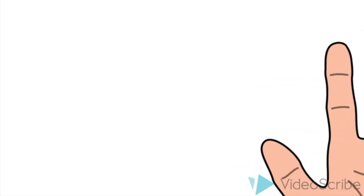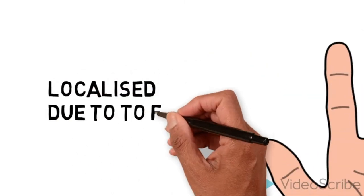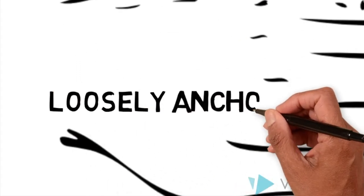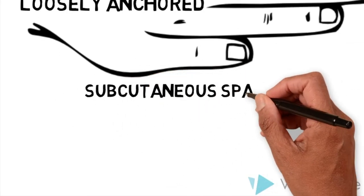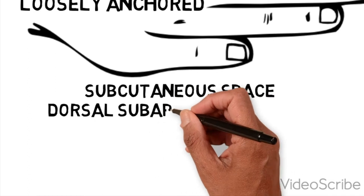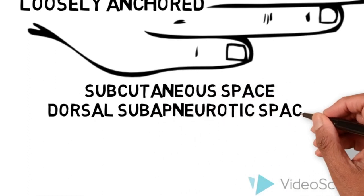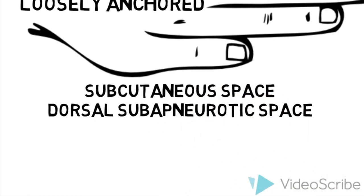In the palm, the infection is usually localized, as fibrous septae limit spread. In the dorsum, the tissue is loosely anchored, allowing spread of the infection into two potential spaces: either the dorsal subcutaneous space, which is superficial to the extensor tendons, or the dorsal subaponeurotic space, which is deep to the extensor tendons. This usually presents with pain with extension.